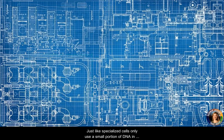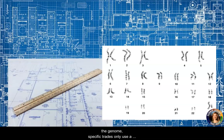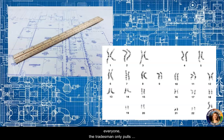Just like specialized cells only use a small portion of DNA in the genome, specific trades only use a portion of the information on a blueprint. While the blueprint includes information needed for everyone, the tradesman only pulls the information that applies to them.